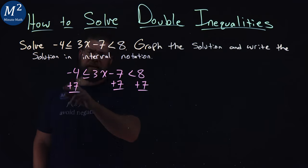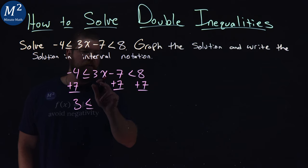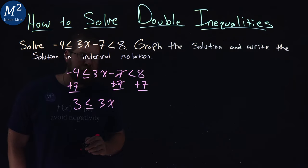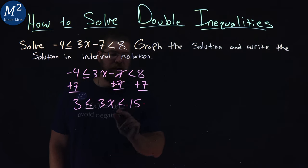So moving on, negative four plus seven is positive three, is less than or equal to, well, just the three x comes down. These sevens cancel. Eight plus seven is fifteen. And we have less than fifteen here.